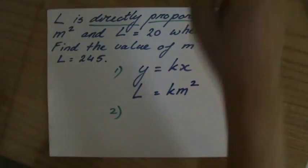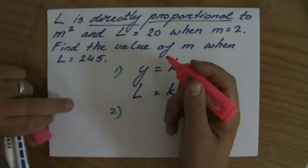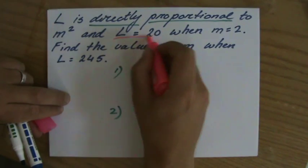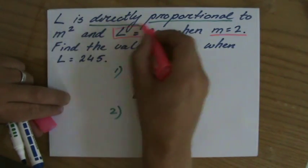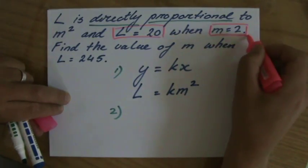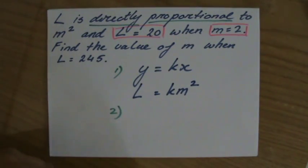Then they say, well, when L is 20, m is 2. And they will always give you those values because you know that you have to find out what that constant is first.